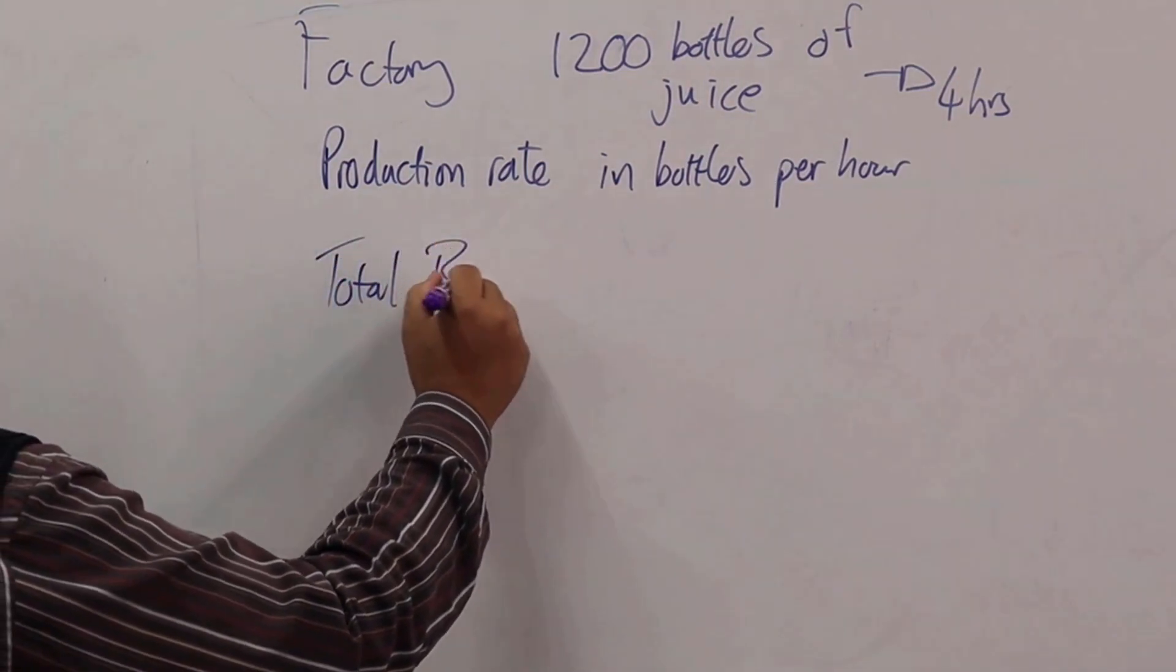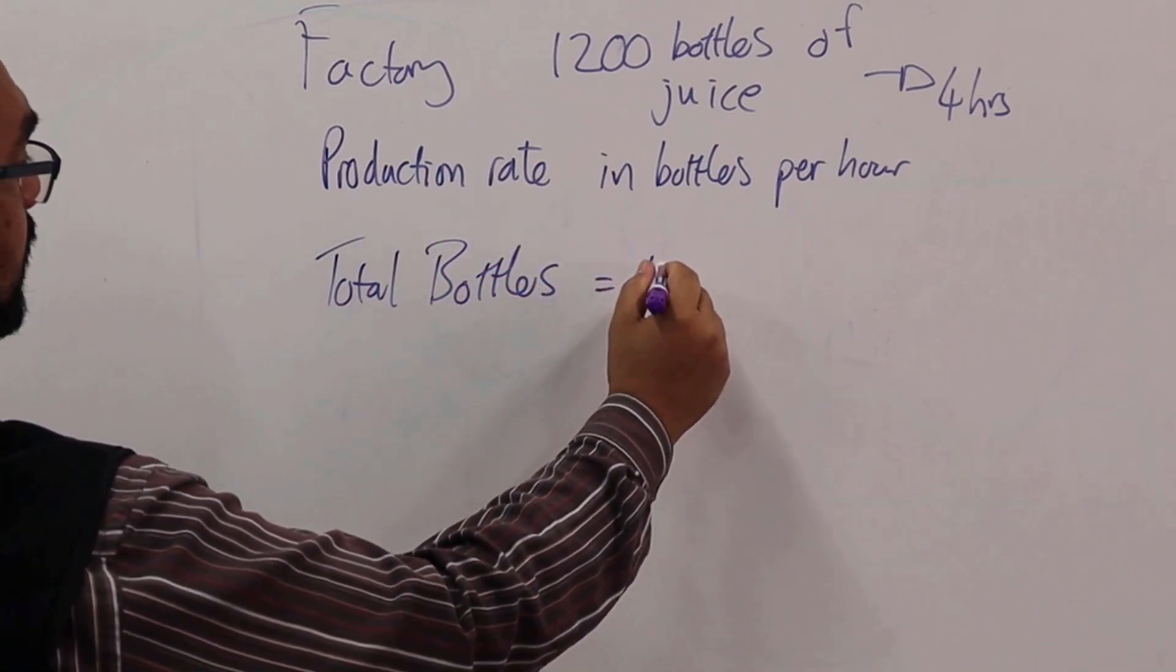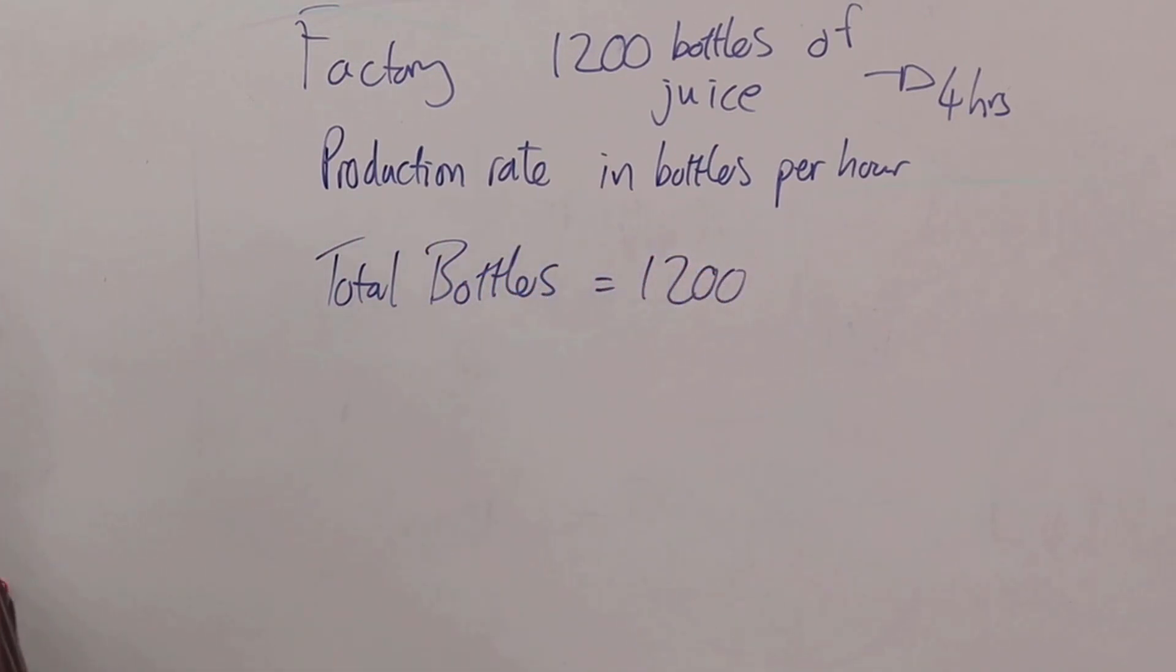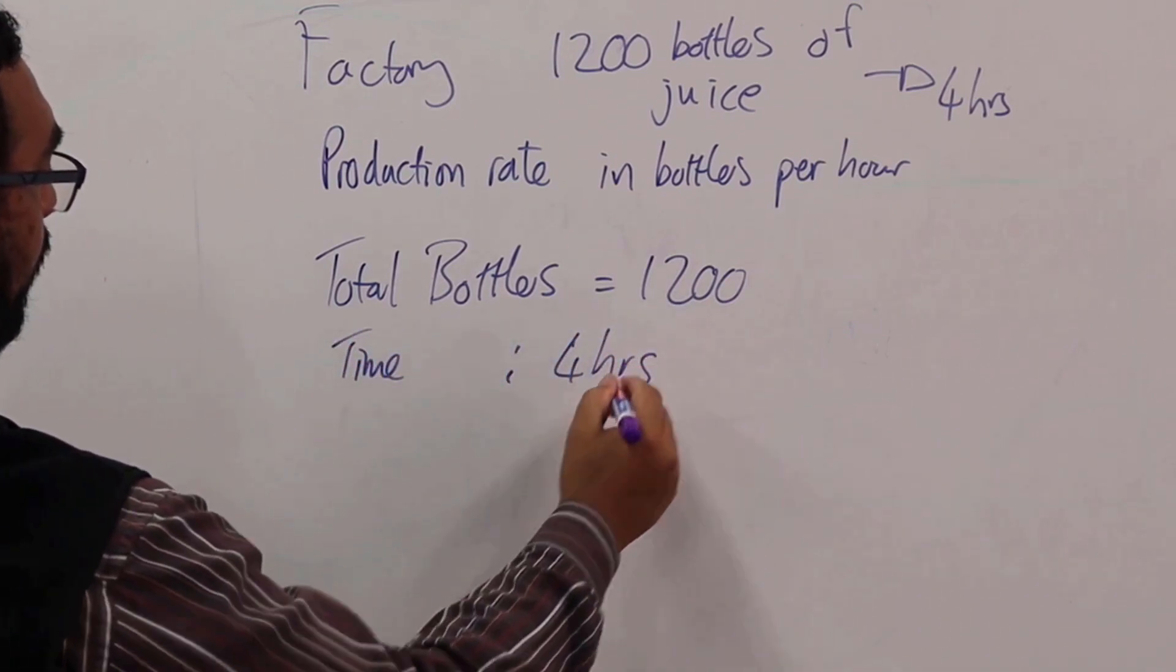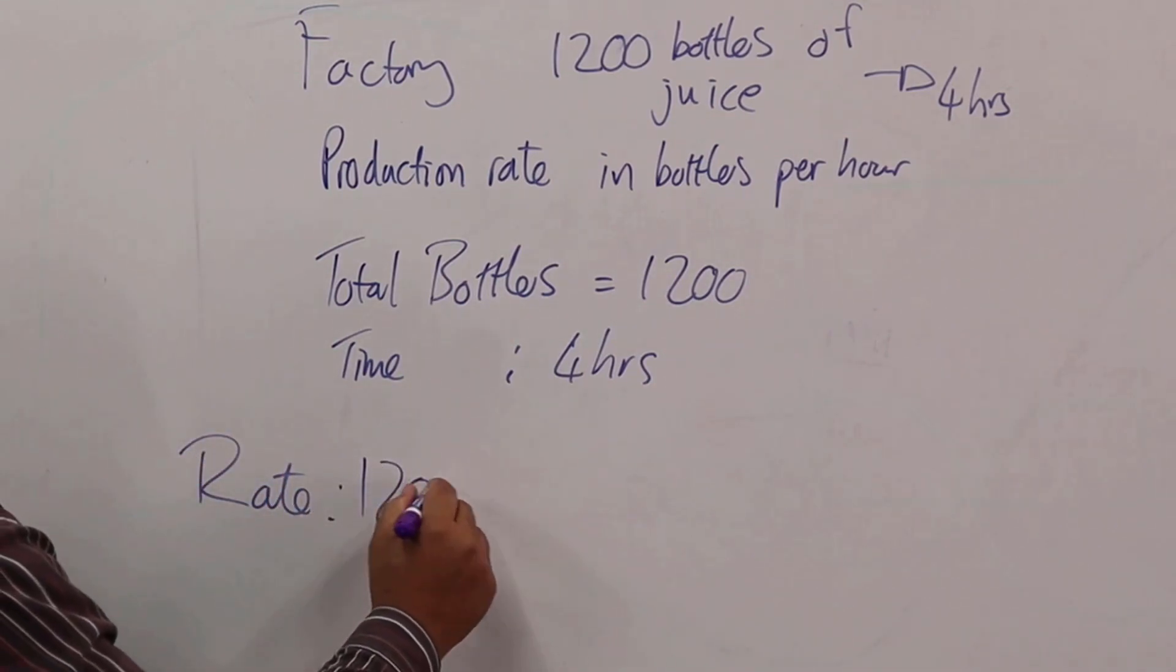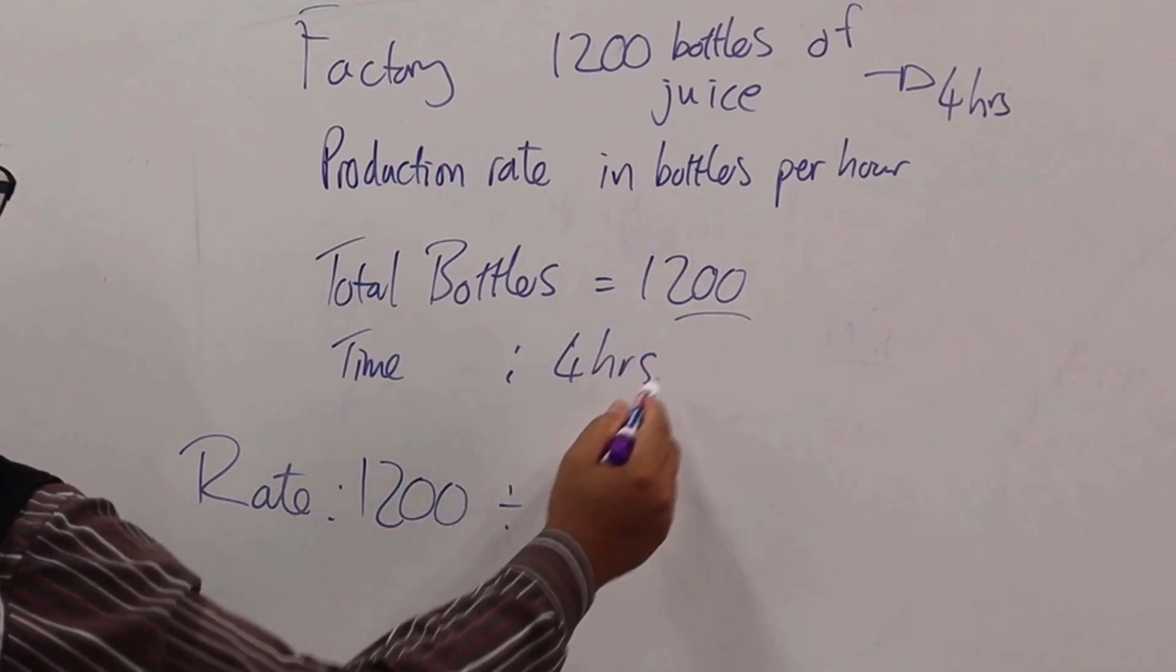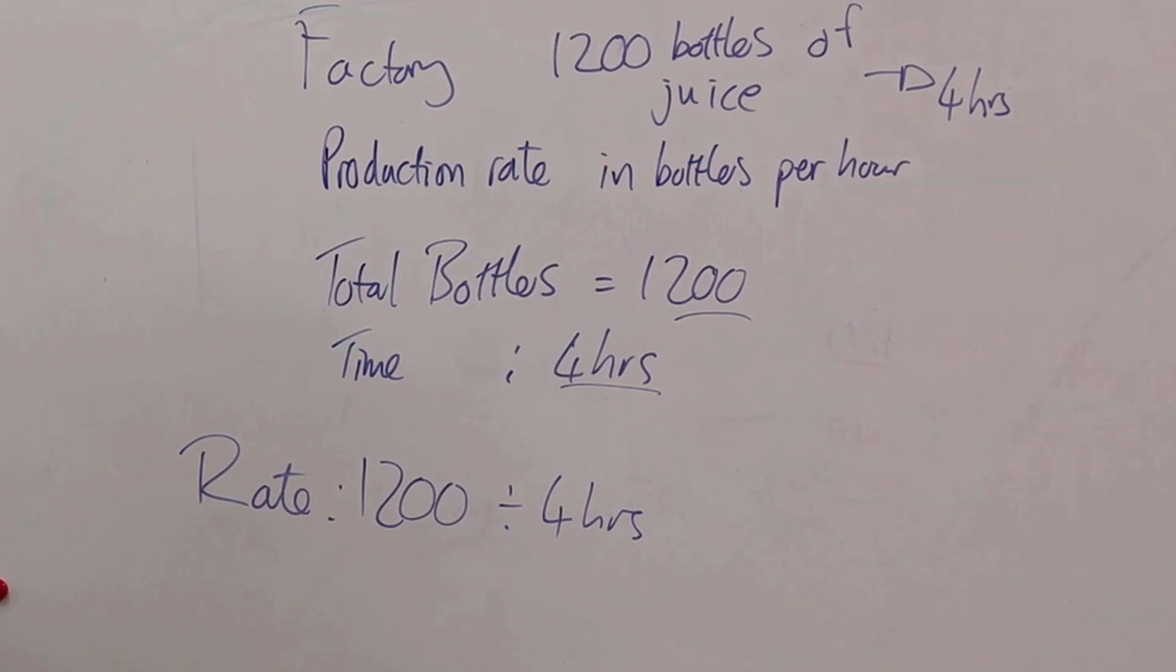the total bottles that are produced, which is 1200. We also have the time in which that is done, and that is four hours. So what are we going to do? Same thing we've done every time. Take our rate, take our 1200 bottles, divide that by our time, and we end up with 300 bottles